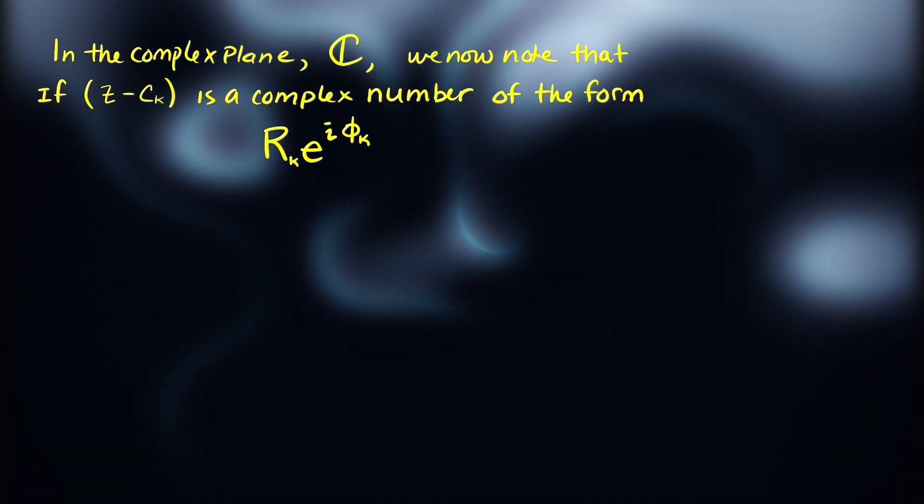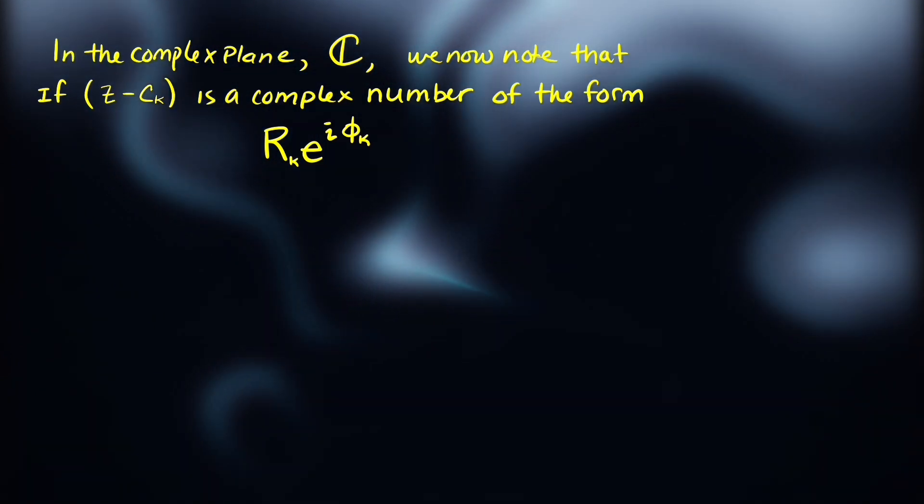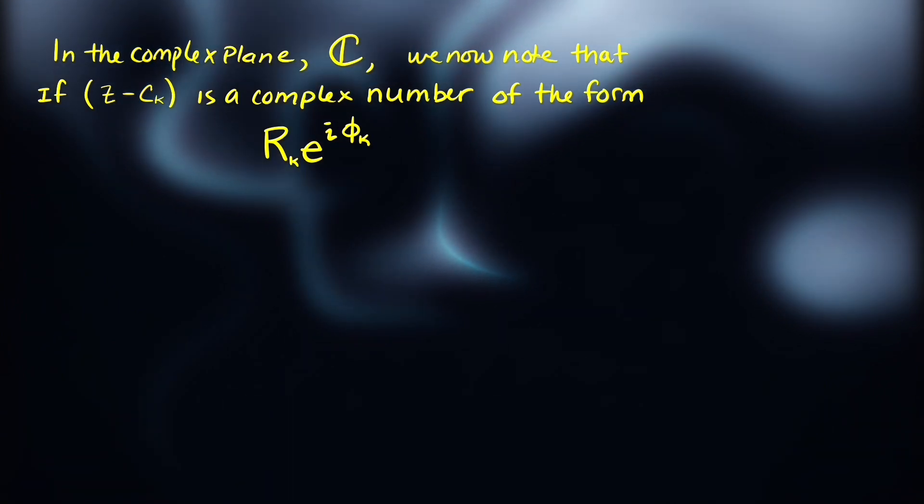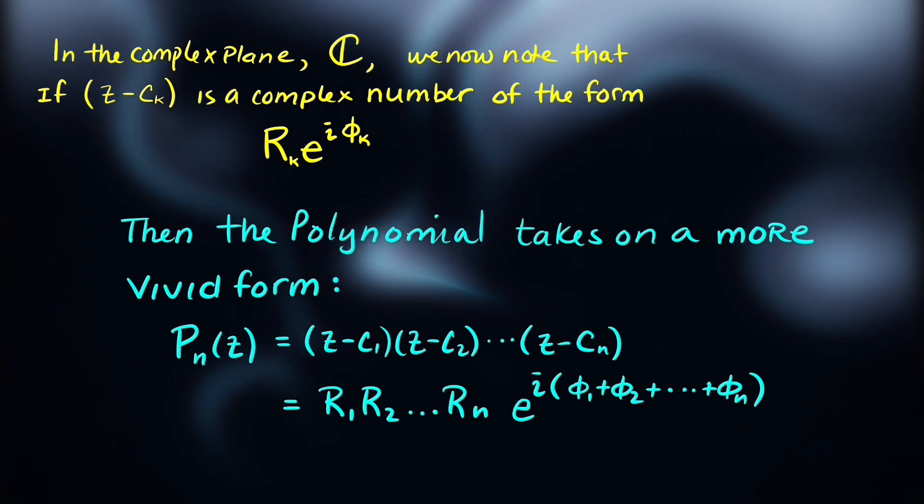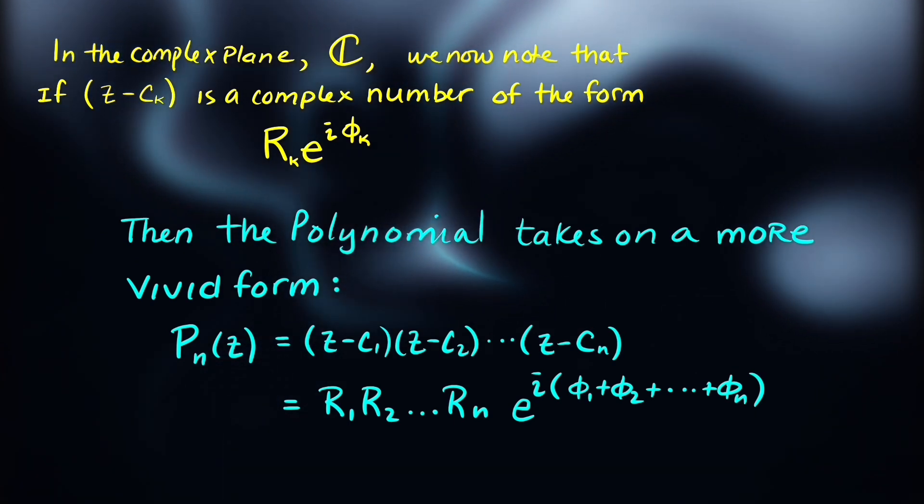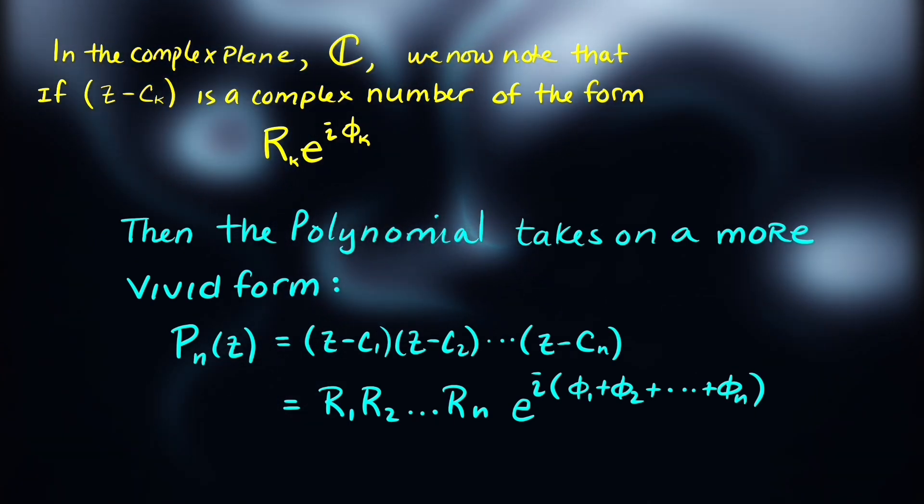Euler's formula for a complex number allows us to write the factor z minus c_k as a complex number in polar form. And when we do that for each factor, the polynomial takes on a more vivid form.